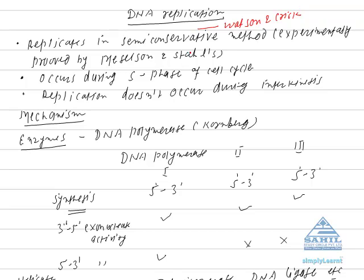DNA replication means duplication of DNA. DNA replicates in a semi-conservative manner. It was first proposed by Watson and Crick, but experimentally it was proved by Meselson and Stahl in E. coli.